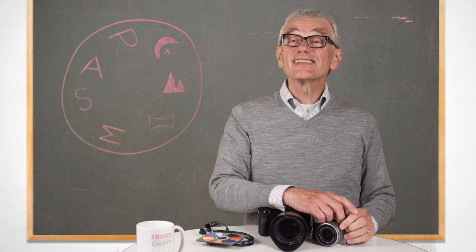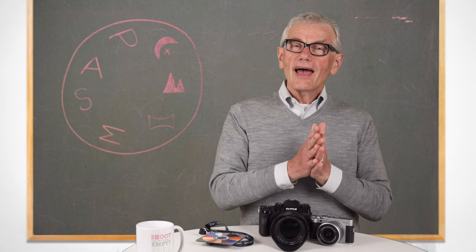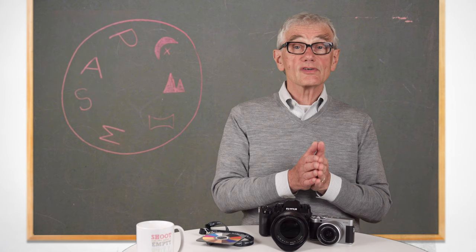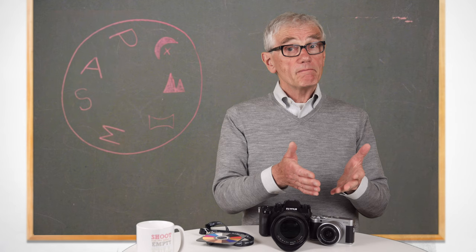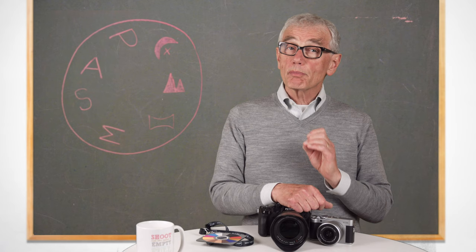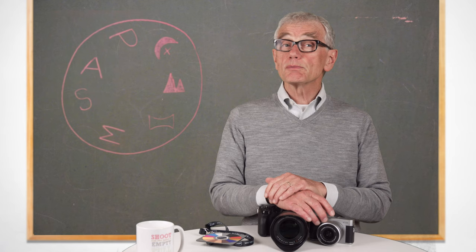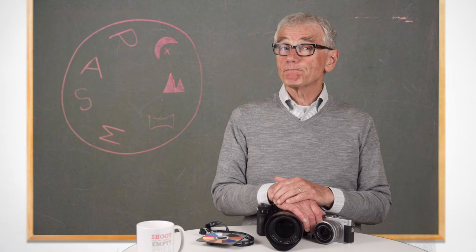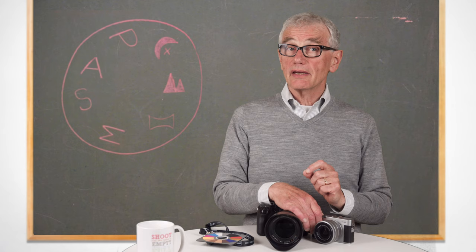The meter. Each camera has slightly different names, but generally there's one meter setting that covers the whole scene — that may be called matrix, multi, or evaluative. Then there's usually a setting called center-weighted, which gives exposure preference to the center of the scene. And many cameras have a spot meter, which works best when it can be combined with the focus spot. If you're not happy with your camera's computer's exposure setting, changing the meter setting may help.